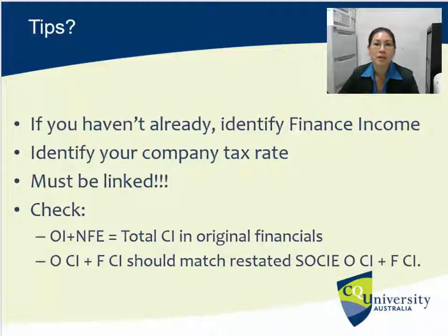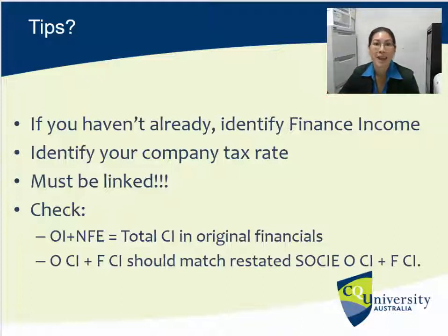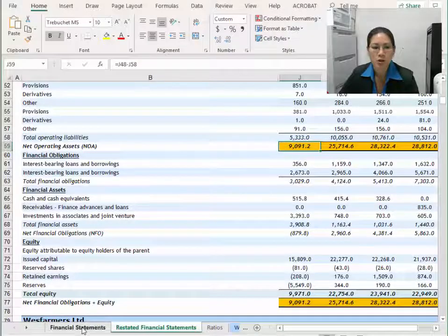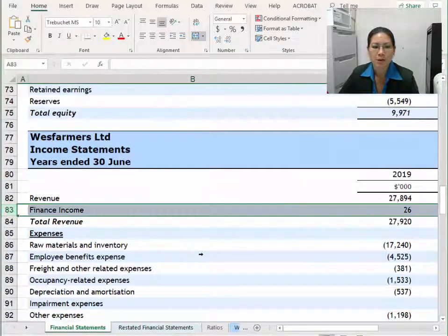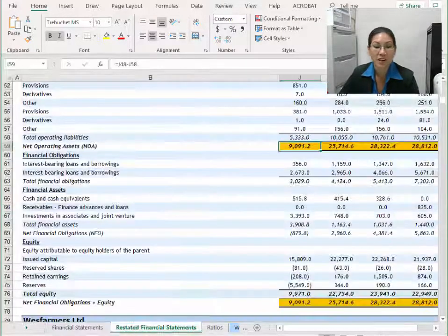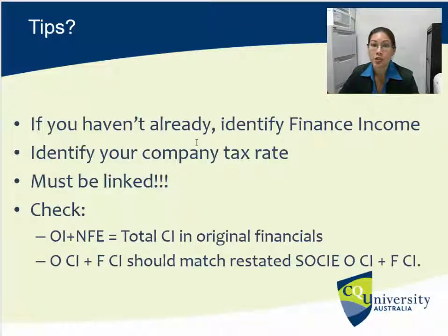There are a couple of things that can make life a bit easier for us as we are restating. If we haven't already, you need to identify finance income, because when we separate out the F section — the financial section — we need to include an item for finance income. We already did this in a previous video when we were entering the financial statements. If you followed those steps back then you've already done this. If you haven't done that, you need to do that now.